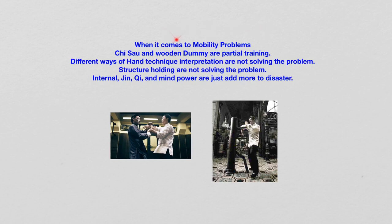When it comes to Mobility Problems, Chi Sao and Wooden Dummy practice are just partial training. Different ways of hand technique interpretations are not solving the problem of Mobility Handling. Structure holding is not solving the Mobility Problem. Not knowing about the existence of Mobility Handling — internal jing, chi, mind power — just adds more to disaster.